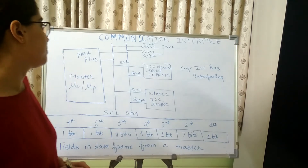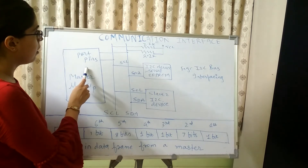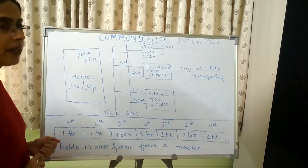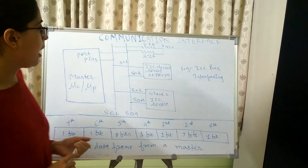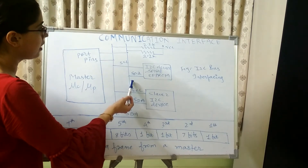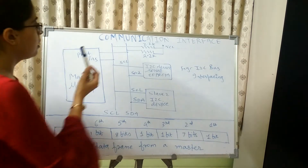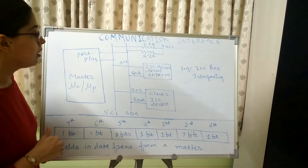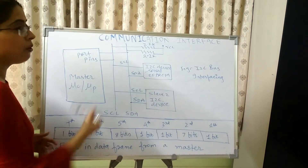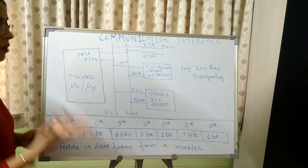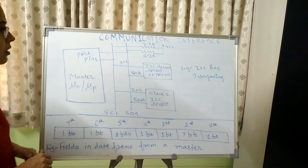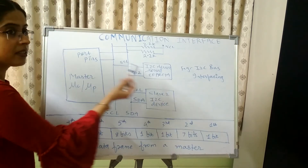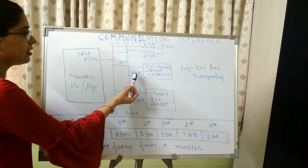Now we will see the working of the I2C bus — how the communication takes place. Initially, the master device pulls the SDA line to logic high, and then pulls the SDA line to logic low. The SCL line is at logic high and SDA line is at logic low — this is the condition for start of communication.